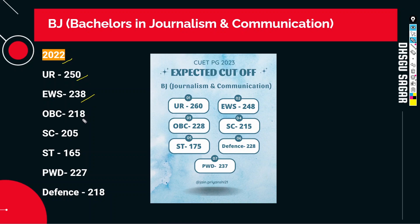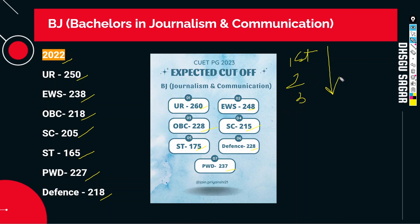There is also special counseling for the sports quota and defense quota. After MJ, we will talk about BJ, that is Bachelors in Journalism and Communication. In Bachelors in Journalism and Communication, comparing with 2022: UR 250, EWS 238, OBC 218, SC 205, ST 165, PWD 227, Defense 218.